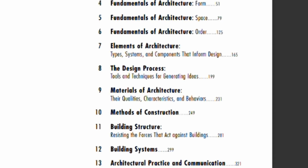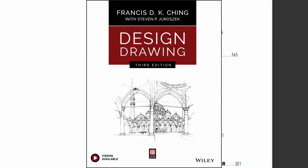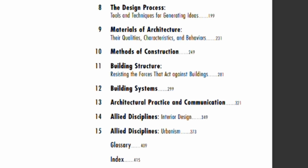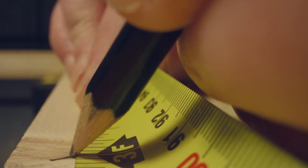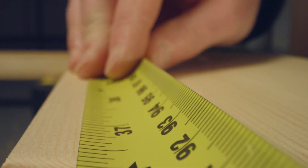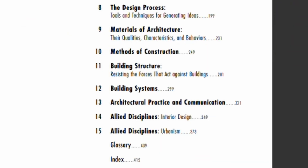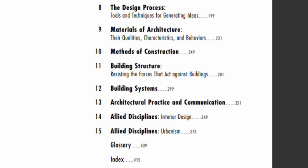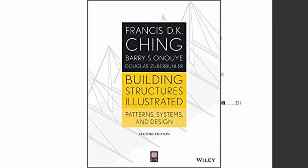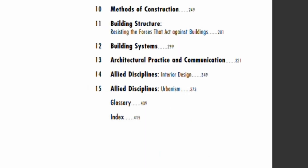Chapter eight can totally be skipped — instead, go read Design Drawing. Chapter nine is a great introduction to basic materiality, so definitely read all of chapter nine. For chapter ten, go read Building Construction, and chapters eleven to twelve can be replaced with Building Structures.